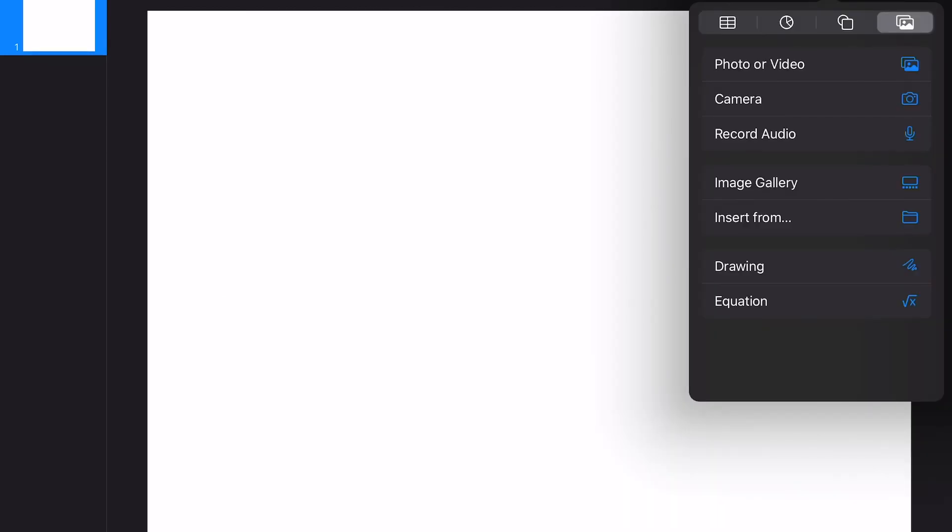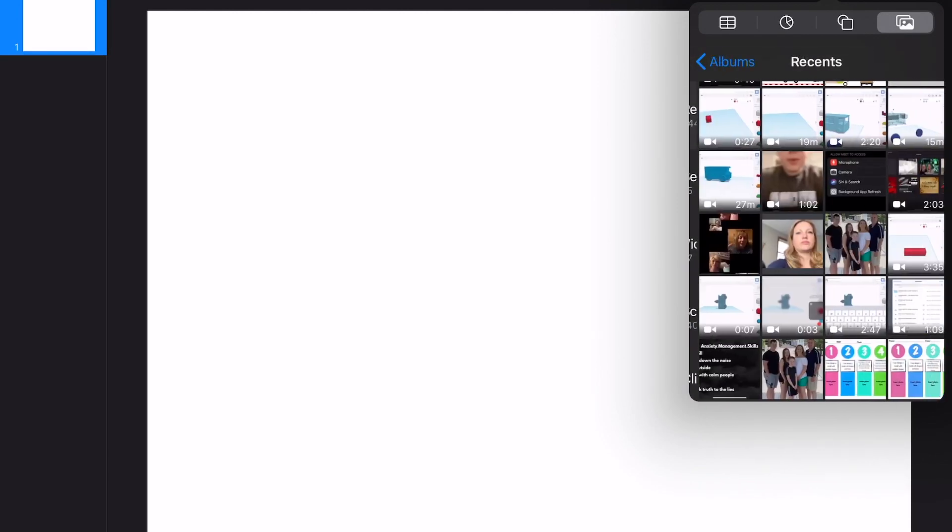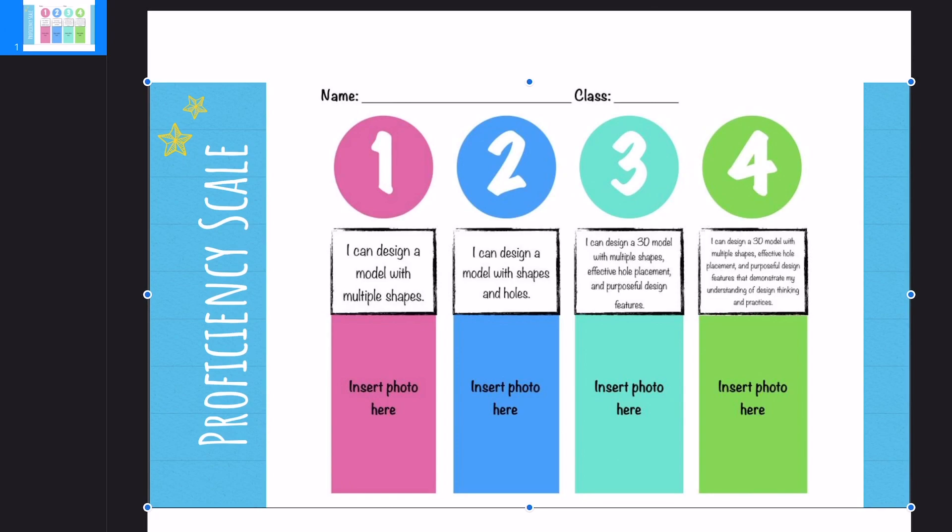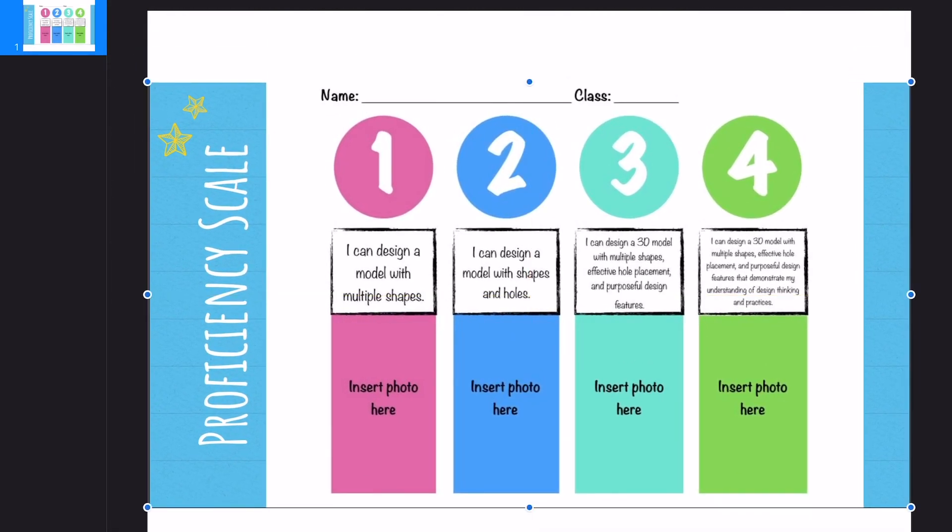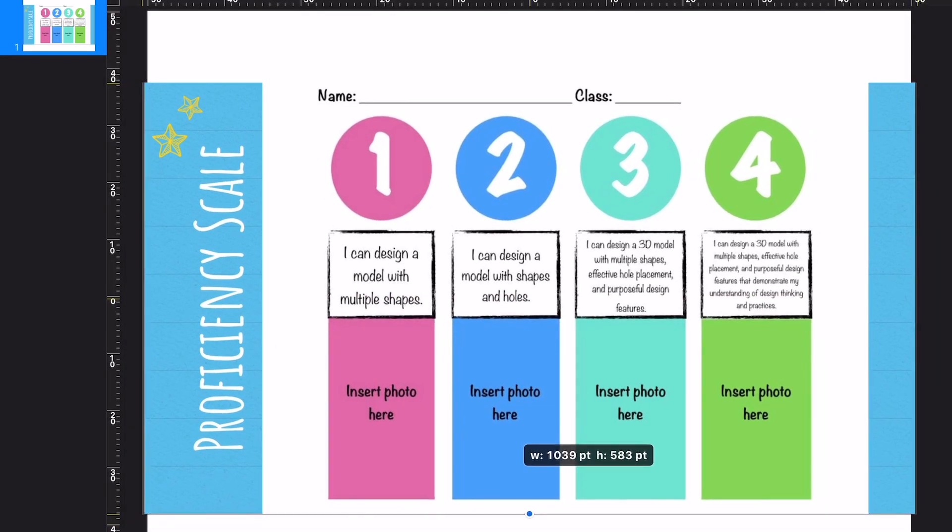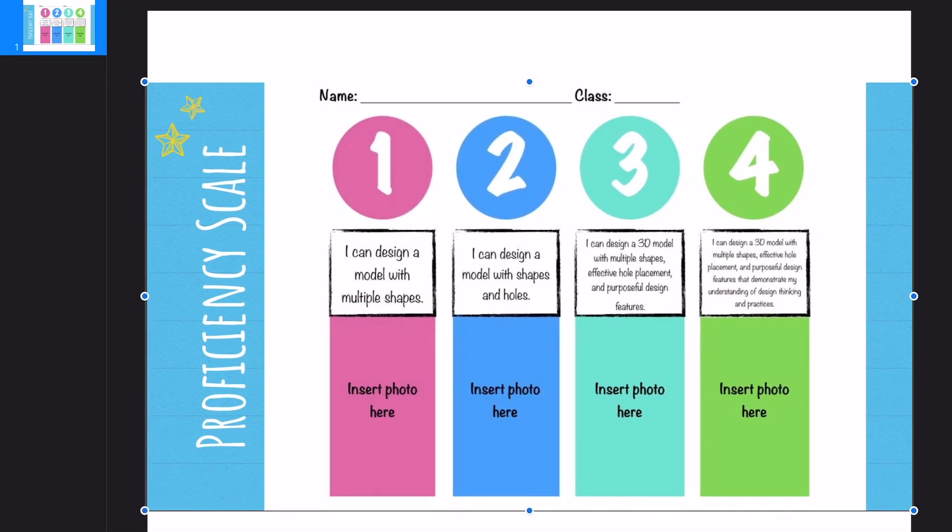And then I'm going to hit that plus sign in the upper right hand corner and I'm going to add a photo or a video. So here is the proficiency scale that I pulled right off of your homework assignment. If you want to stretch it out and make it bigger, you can. I'm not too worried about it.